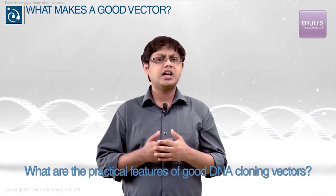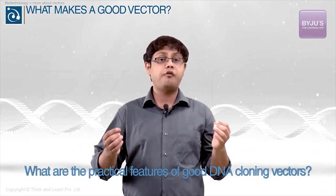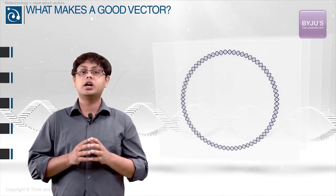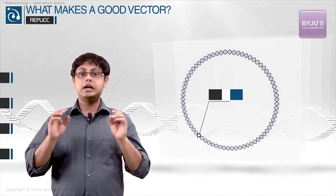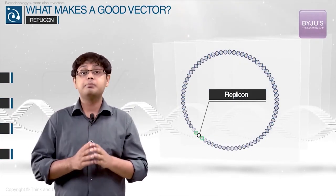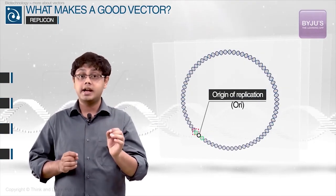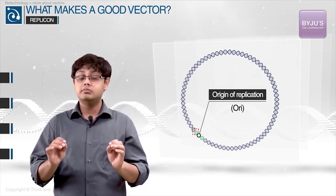So, what are the practical features of a good DNA cloning vector? Well, for starters, you will want the plasmid to replicate once it is inside the host cell. To ensure this, there is a basic sequence that the plasmid should contain: the replicon. The replicon comprises the origin of replication, or ori, and all its control elements.